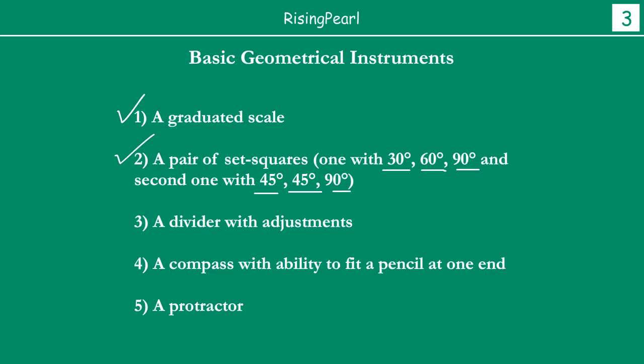So, Dostho, yeh the aapke second important things in your tool kit. The third is a divider, fourth is a compass — which has the ability to fit in a pencil at one end. We are going to talk a lot about compass actually in this brand new Series 11 about geometrical constructions. And then finally, a protractor. So these are the five things that in general aapke geometry box mein always honi chahiye.